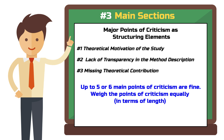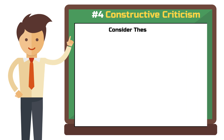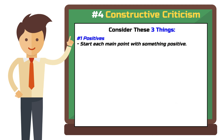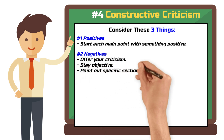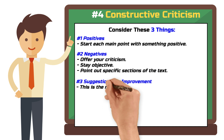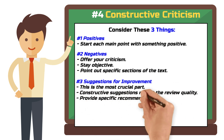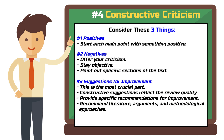Step 4: Constructive Criticism. In your critique, it's essential to consider three things. First, positives — for each main point, start by mentioning what you liked. When writing reviews, it's easy to drift into very harsh criticism; imagine how hard it can be for the authors who have put a lot of work into their paper. Second, negatives — bring up your criticism but remain objective. Specify the parts of the text you had issues with so the authors can quickly find and revise them. Third, suggestions for improvement — this is the most crucial part. The quality of a review is determined by how constructive your comments are. Provide as many specific suggestions for each point of criticism as you can. Recommend literature, better arguments, or methodological approaches that you know but found lacking in the paper.